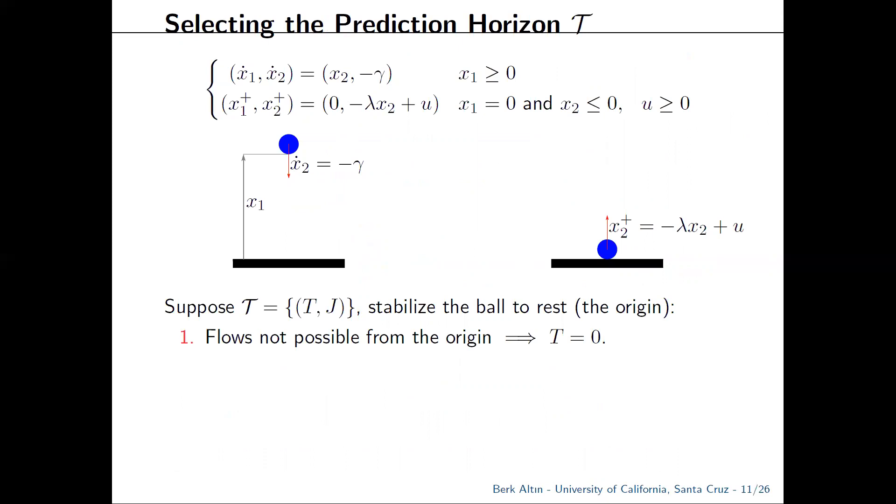With that definition, let's look at the prototypical bouncing ball model. When the ball is in the air, it is subject to Newton's laws. So here, gamma is the gravitational acceleration. And once it hits the ground with non-positive velocity, there's a reduction in speed due to the coefficient of restitution lambda, which is typically less than one, and also a change in the direction of travel. To this model, we also add a positive input term u. And you can think of this as a moving platform hitting the ball to increase its speed.